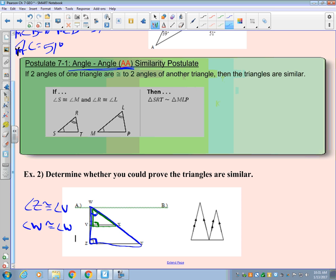So two angles are congruent. So we can say that they are similar by angle, angle, similarity. So we use AA and then the tilde to represent angle, angle, similarity.